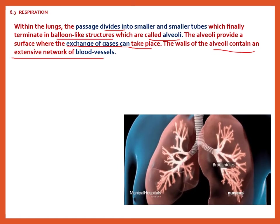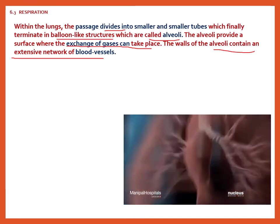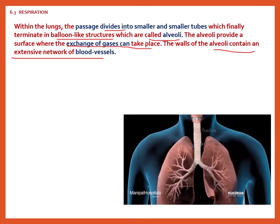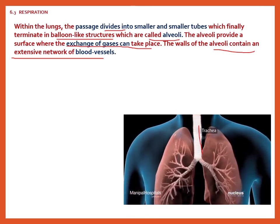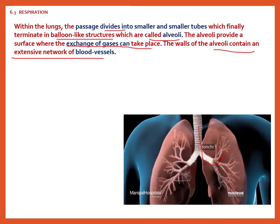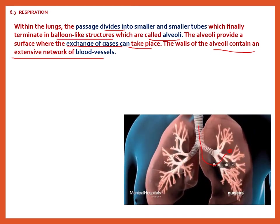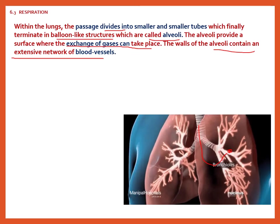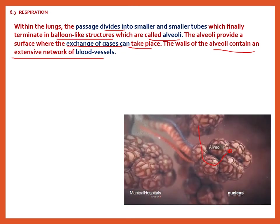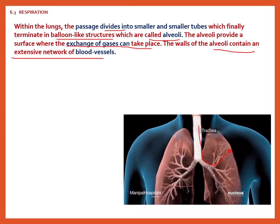The trachea is the windpipe, and within it are the small structures called alveoli — balloon-like structures. In the alveoli, there are blood vessels that carry oxygen and CO2. Oxygen is taken up by the blood and CO2 is released from the blood into the alveoli.